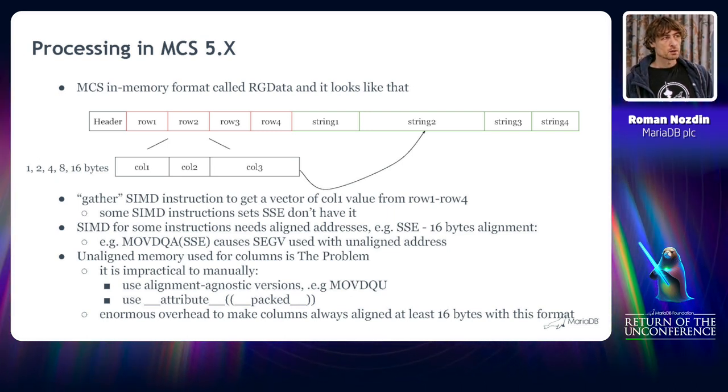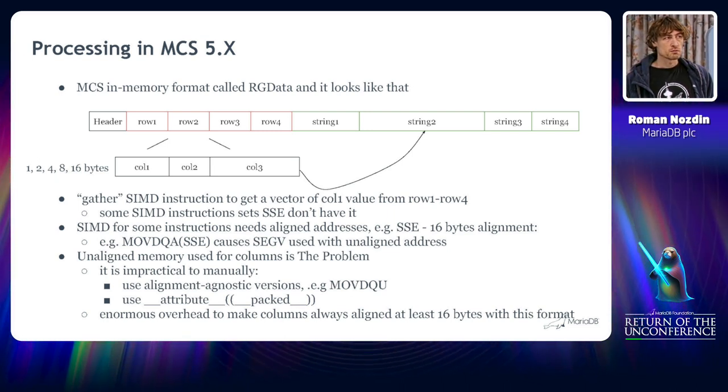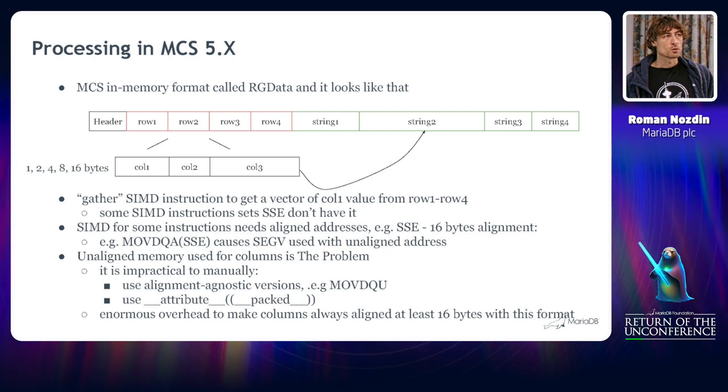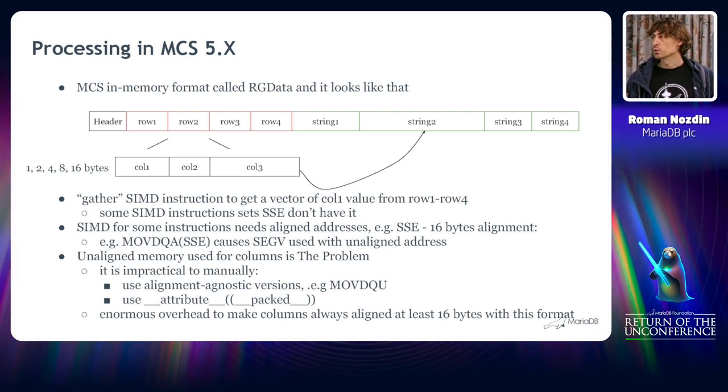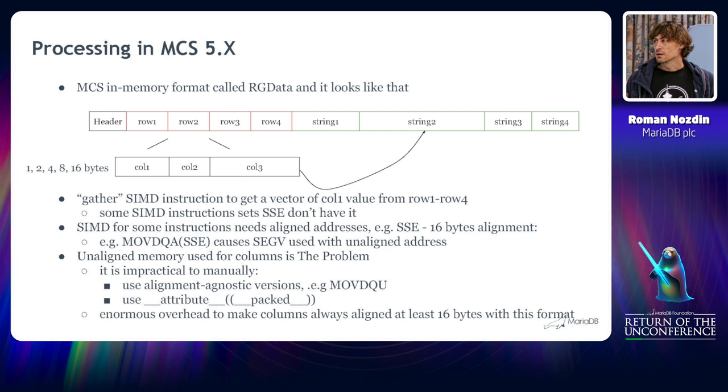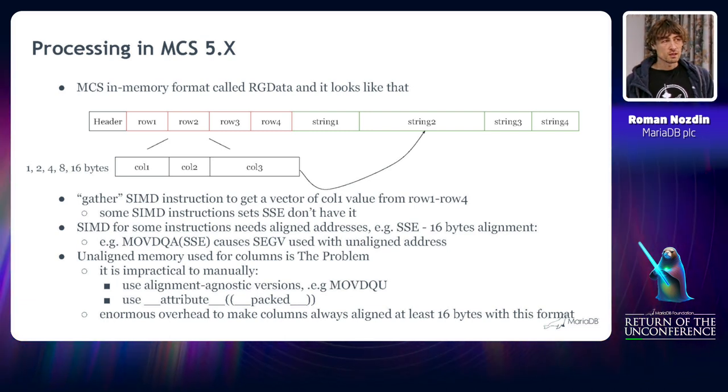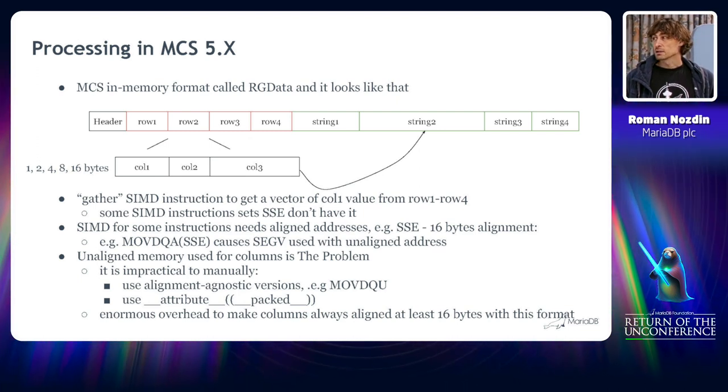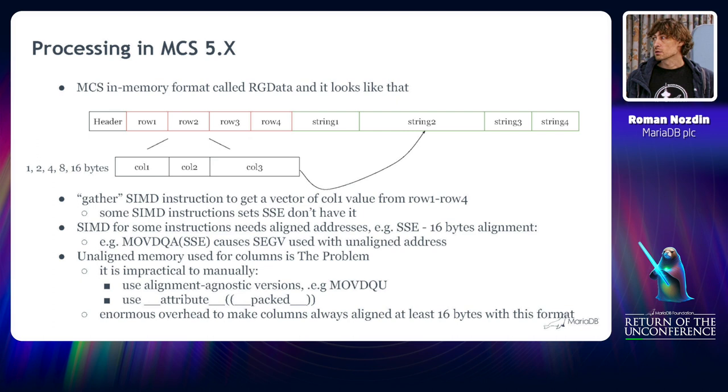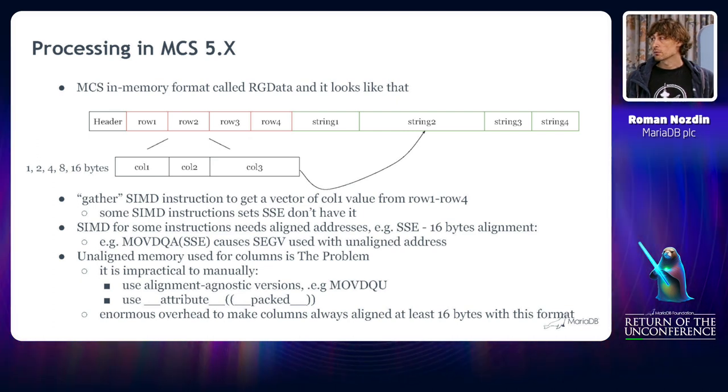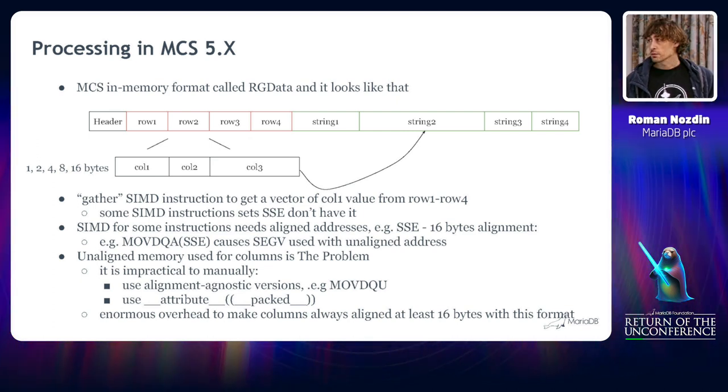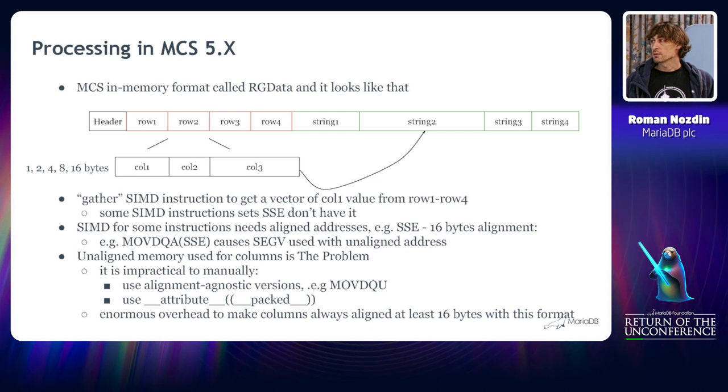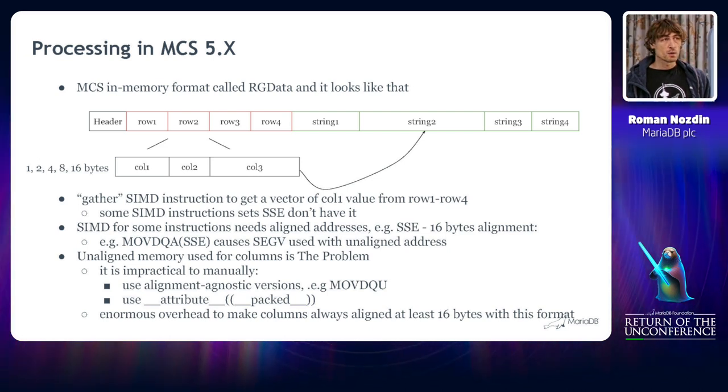Fortunately, there is an unaligned version of most instructions, but compilers don't allow us to control when they put the aligned version and when they don't. So unaligned memory usually is a big problem for the vectorized executor. There are two potential workarounds for this. One, I already mentioned, use the unaligned version of the instructions. And another one is to use this attribute describing the structure itself. But both of them are impractical.